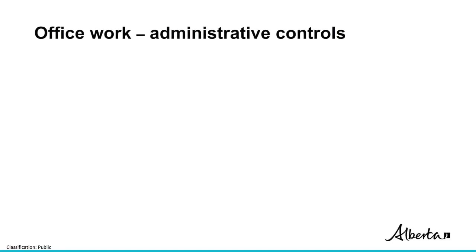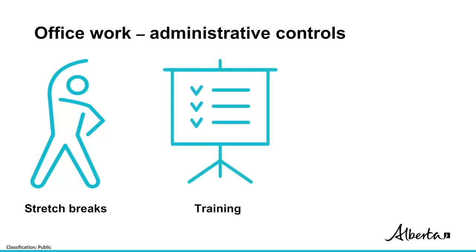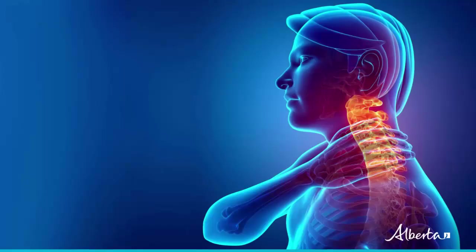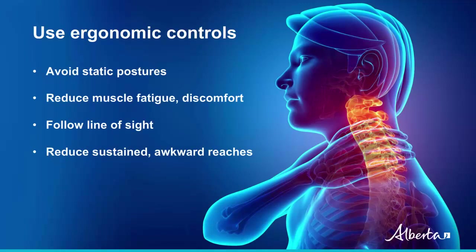Administrative controls could include brief hourly stretch breaks for position changes, rotating tasks to reduce repetition, training to educate workers how to adjust equipment to minimize awkward posture, or keeping a maintenance program to repair malfunctioning or broken equipment. There are some basic ergonomic principles that can be used to address MSD hazards in an office or similar environments. In many cases, these are classified as engineering or administrative controls.